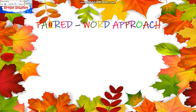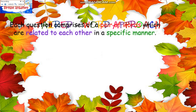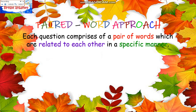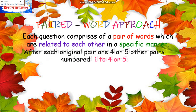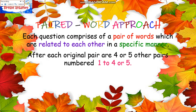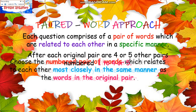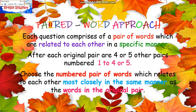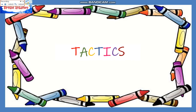Now let's touch on the paired word approach. Each question comprises a pair of words related to each other in a specific manner. After each original pair are four or five other pairs numbered one to four or five. You have to choose the numbered pair of words which relates most closely in the same manner as the words in the original pair.